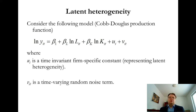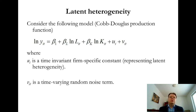Latent heterogeneity would also be relevant when modeling cross-country panels, where different countries have different economic structures, different climate conditions, and so on. Panel data opens the door to modeling this kind of u_i term, which is not really possible in a purely cross-sectional or time series setting.